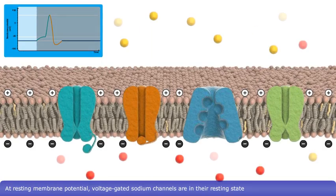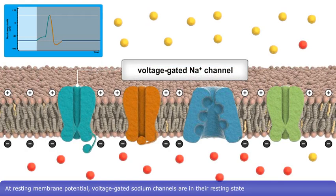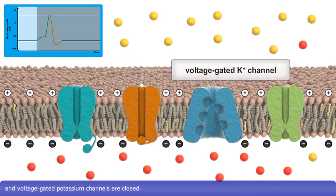At resting membrane potential, voltage-gated sodium channels are in their resting state, and voltage-gated potassium channels are closed.